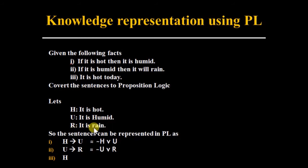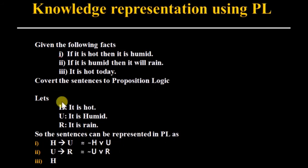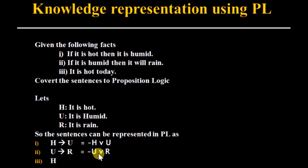H represents 'it is hot,' U represents 'it is humid,' and R represents 'it will rain.' The first sentence, 'if it is hot then it is humid,' can be represented as H implies U. By using the equivalence law, we can write this as NOT H OR U. The second sentence, 'if it is humid then it will rain,' is U implies R, which becomes NOT U OR R.